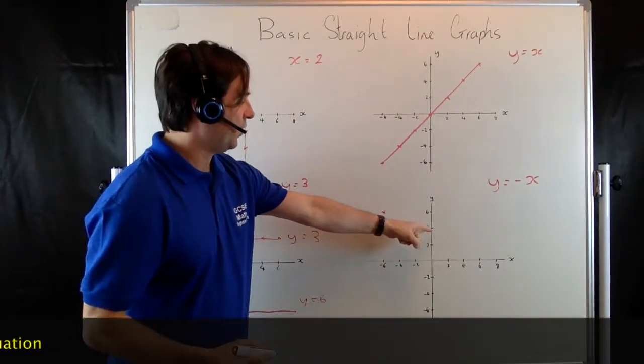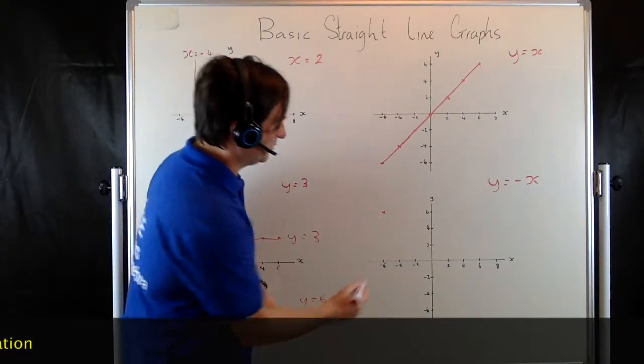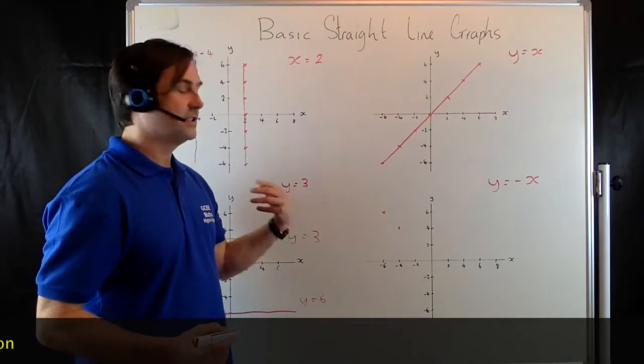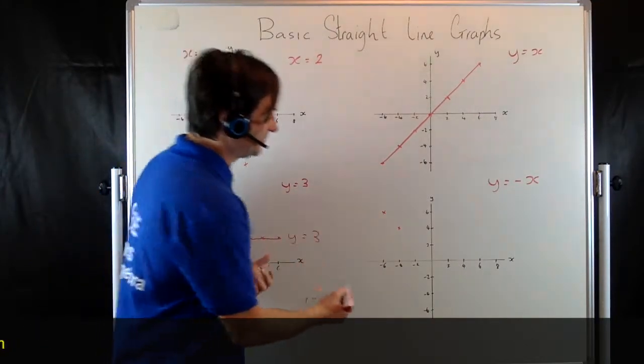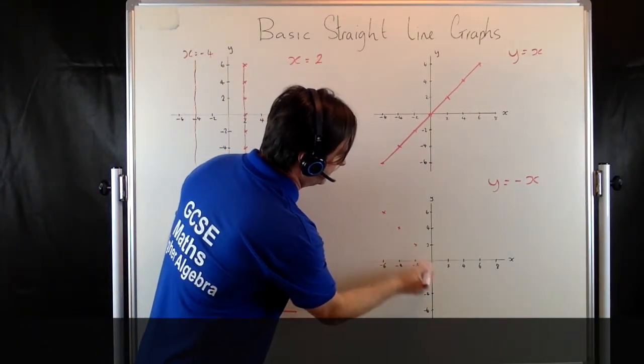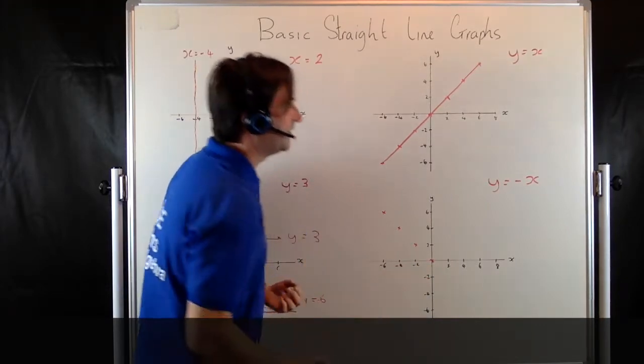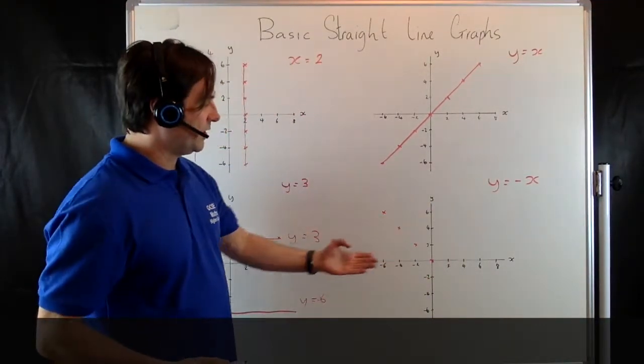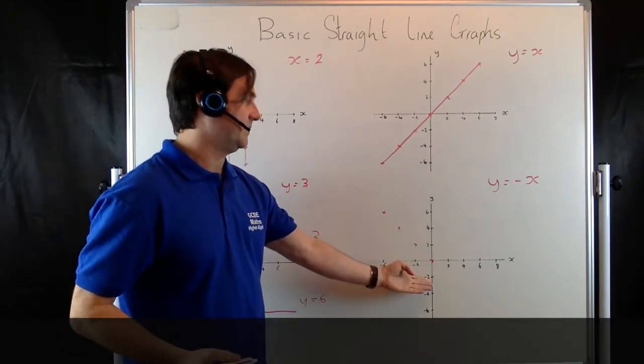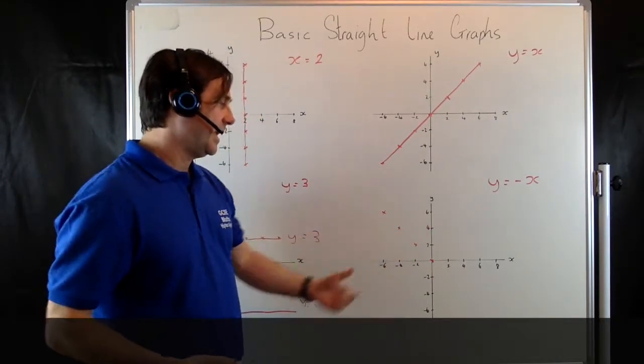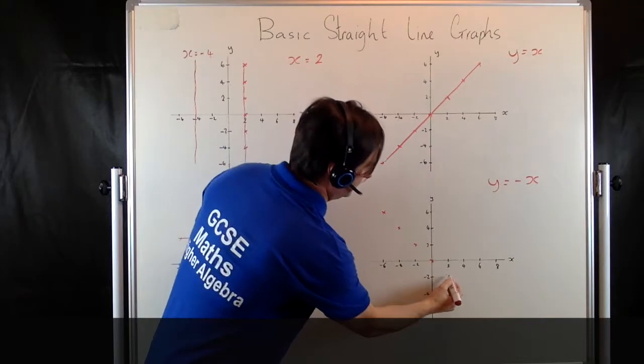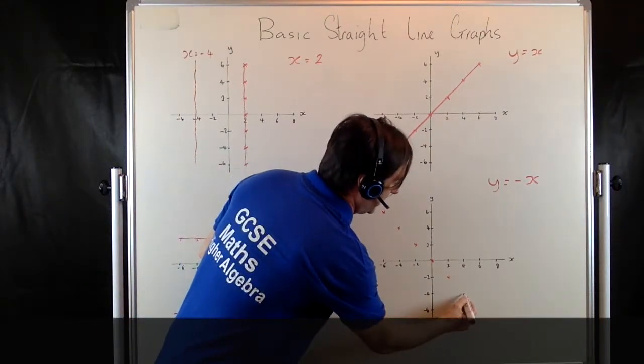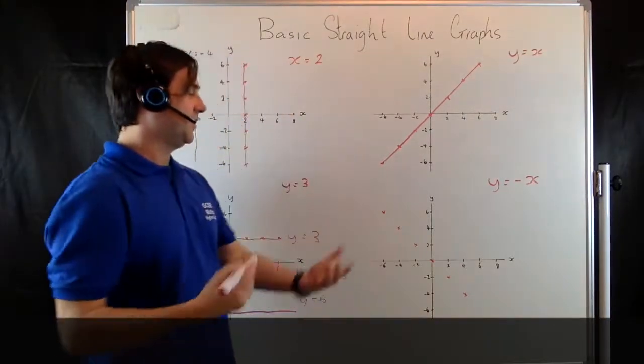When y is 4, x has got to equal negative 4. So you can see that this graph is sloping downwards from left to right. 2, negative 2; 0, 0. Well, y is going to equal negative x. So when y is negative 2, then x is going to equal 2. When y is negative 4, x will equal 4. It reverses the graph.